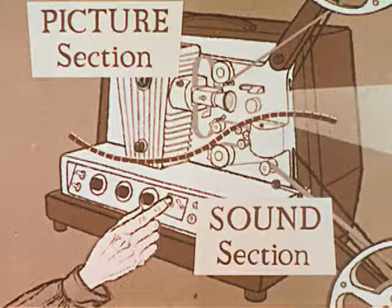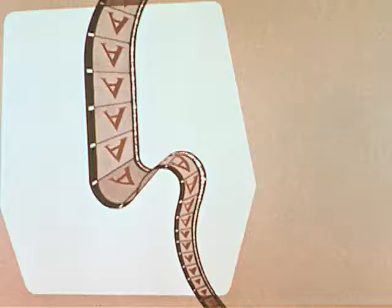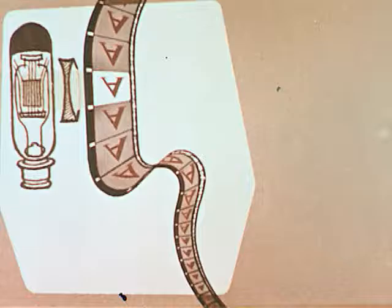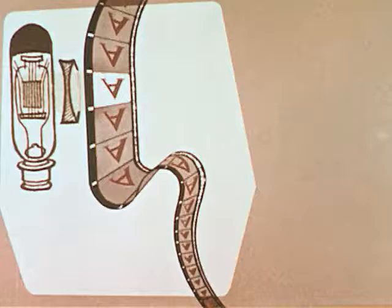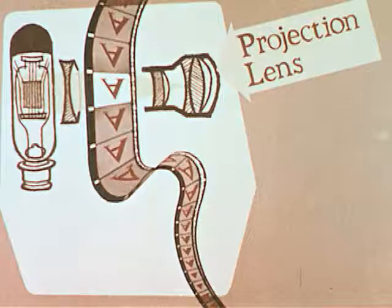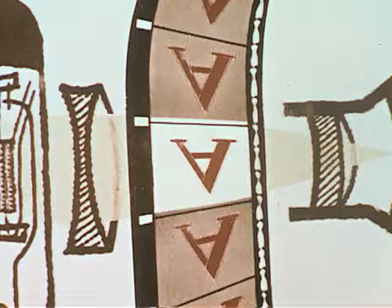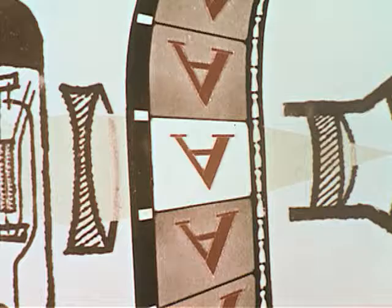As the film moves through the projector, it first enters the picture section. This section consists of the projection lamp, which is a very bright light source. This light is concentrated on a single frame of the film by a condenser lens. The brilliantly illuminated frame of the film is projected by the projection lens onto the screen. The lens is moved to focus the picture. As the film moves through the picture section, it pauses on each frame. In a sound projector, this happens 24 times a second.